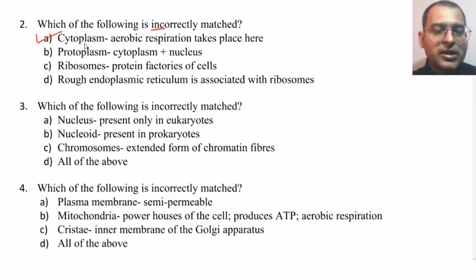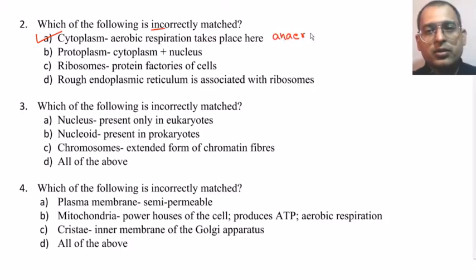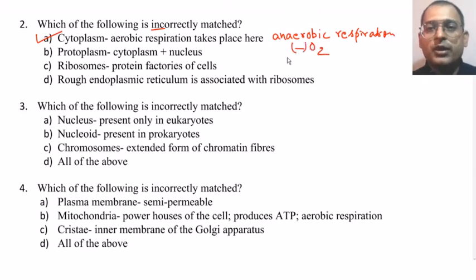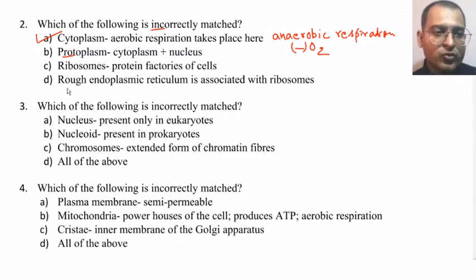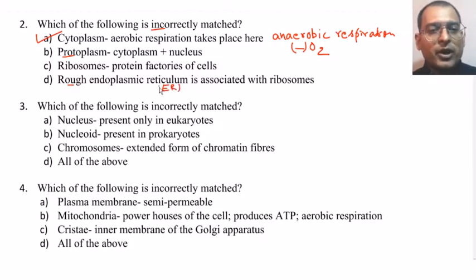The answer is cytoplasm, because in the cytoplasm anaerobic respiration takes place — it occurs in the absence of oxygen. Protoplasm is a combination of cytoplasm and nucleoplasm. Ribosomes are known as the protein factories of the cells because they synthesize proteins. Rough endoplasmic reticulum is associated with ribosomes, which is why it appears rough.